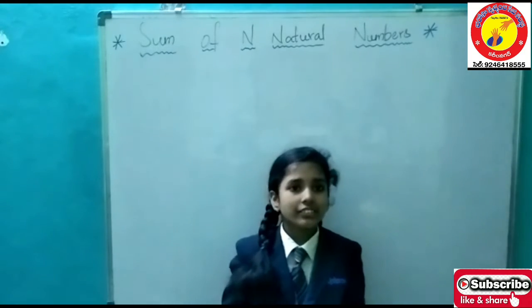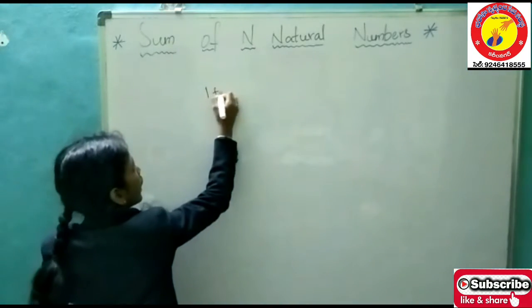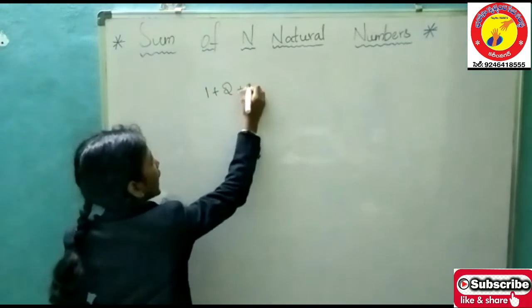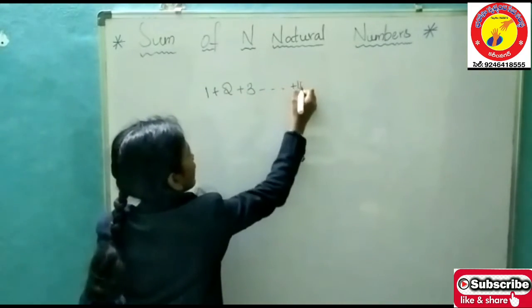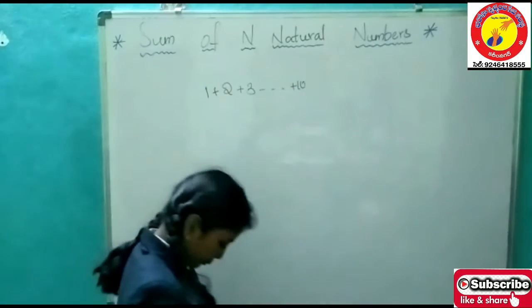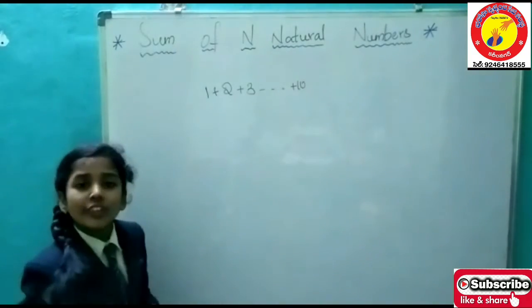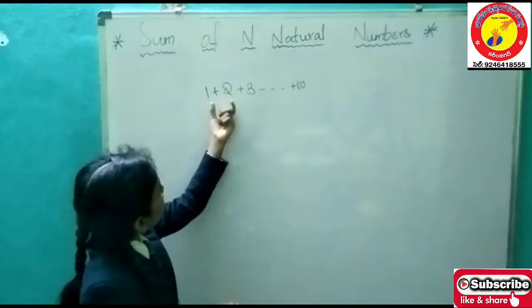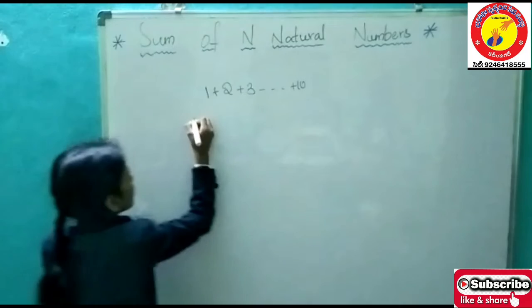But when they ask to do 1 plus 2 plus 3, and so on plus 10, how will we do this? First, we will write these overall numbers in order and we will find the sum. So let's do it.